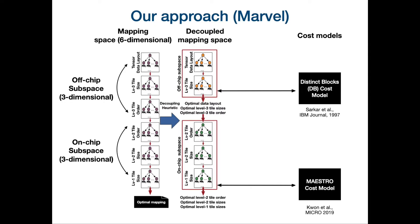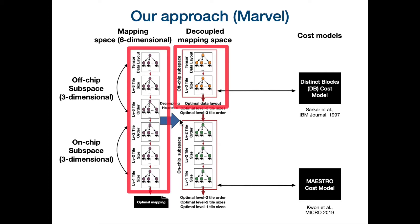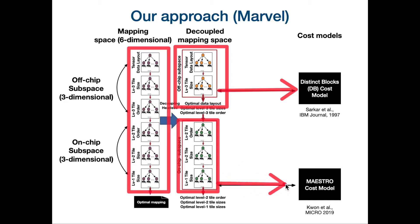Let me give an overview of our approach, which we call MARVEL. The mapping space consists of six dimensions. Based on our observation, we partition this entire six-dimensional mapping space into two three-dimensional subspaces. The first subspace is responsible for off-chip data movement, so we call it the off-chip subspace. The remaining three dimensions are responsible for on-chip data movement, called the on-chip subspace. We then use different cost models for finding optimal mappings of each subspace: the classical Distinct Blocks model for the off-chip subspace, and the Maestro cost model for the on-chip subspace. The final mappings are obtained by concatenating the optimal mappings from both subspaces.